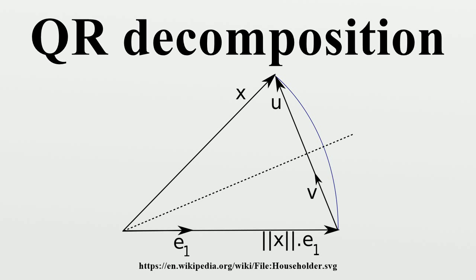If the algorithm is implemented using floating-point arithmetic, then alpha should get the opposite sign as the kth coordinate, where k is to be the pivot coordinate after which all entries are zero in matrix A's final upper triangular form, to avoid loss of significance. In the complex case, set and substitute transposition by conjugate transposition in the construction of Q below.